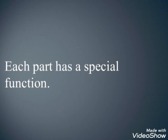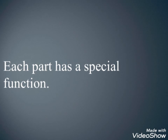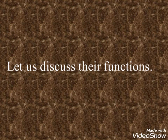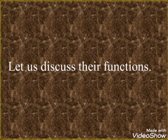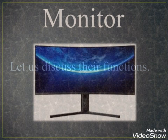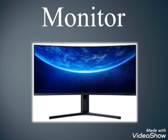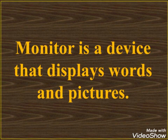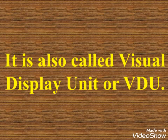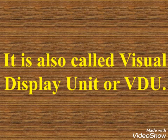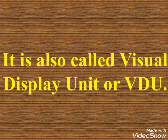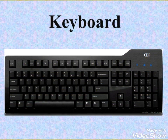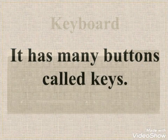Let's start with the monitor. A monitor is a device that displays words and pictures. It is also called a Visual Display Unit, or VDU. Next is the keyboard. It has many buttons called keys.